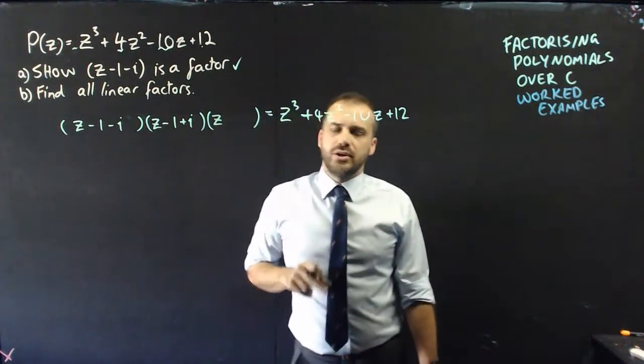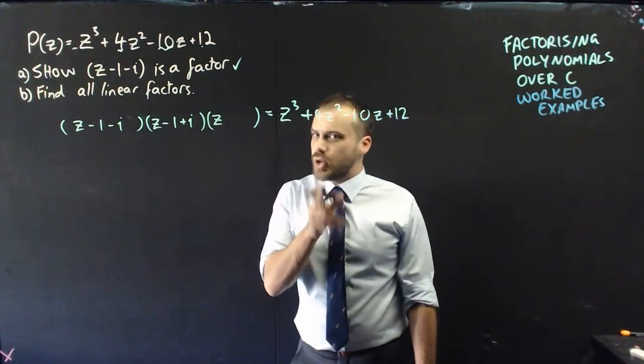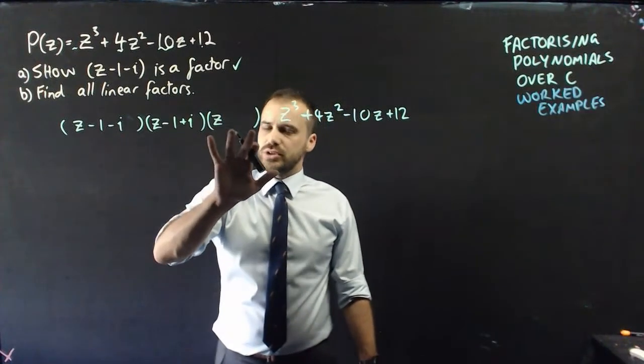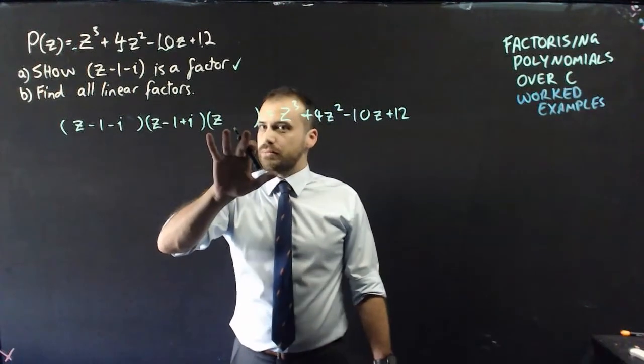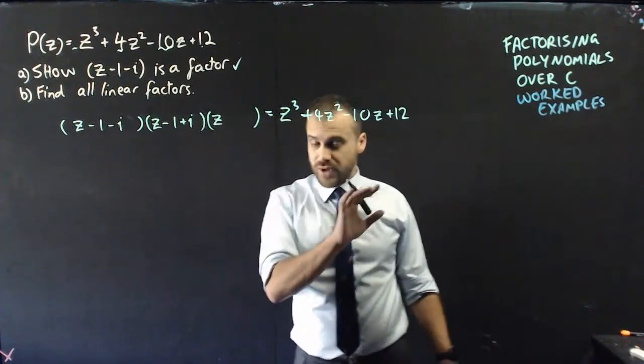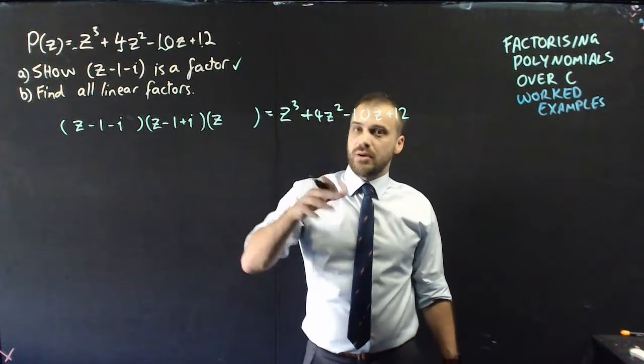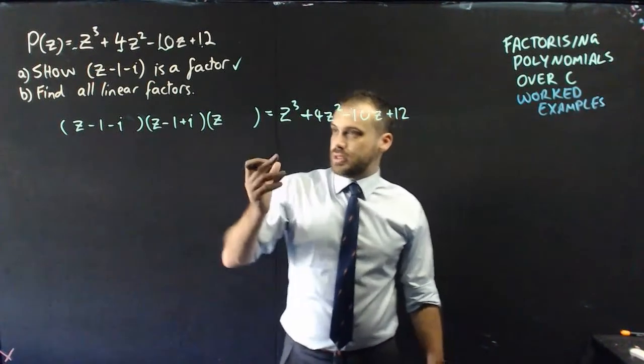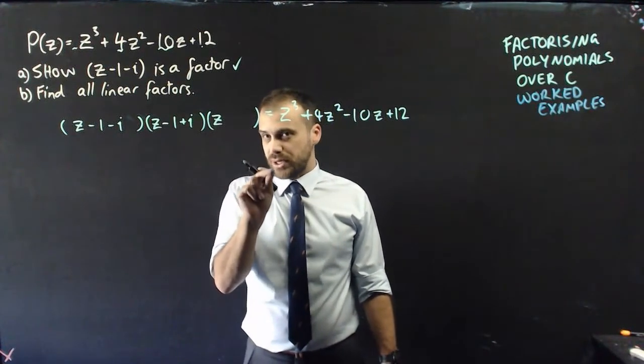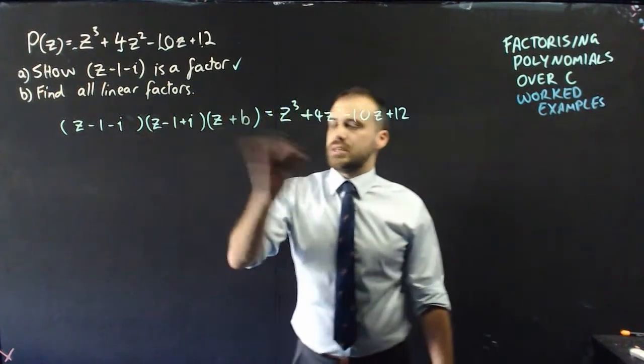If we had a different number there, then that might be different, but it's not, so we can say that. Now, what can we say about this? You might be thinking to yourself, oh, maybe it's a complex number. It can't be a complex number, because if it was a complex number, that would mean that we would need another conjugate pair. We would need another factor on top of that, and we're not going to get another factor out of this polynomial of degree 3. So, that means that this must be purely real, because it's not going to have a friend. So, z plus b.